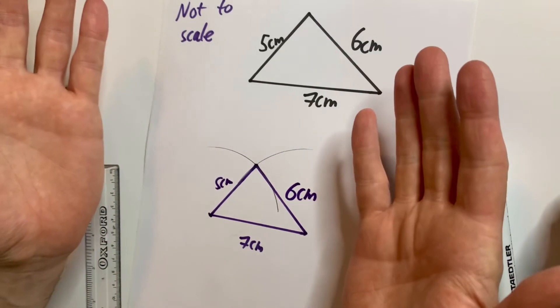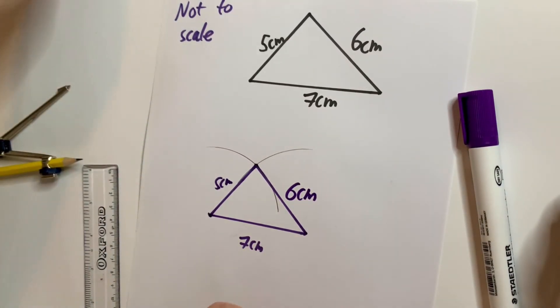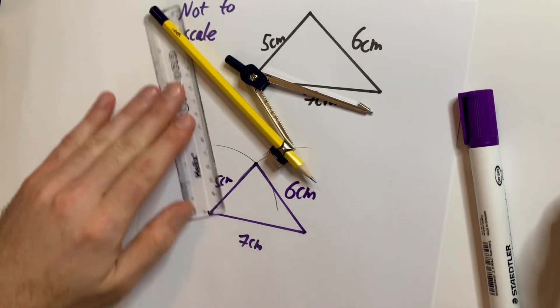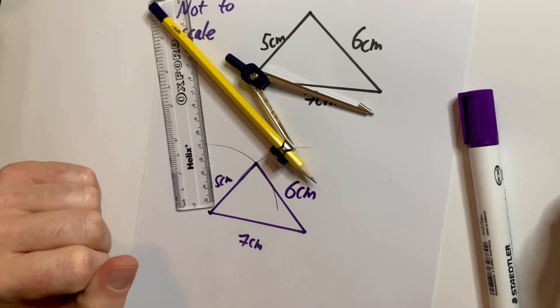And that is drawing a triangle without using a protractor and just using a compass and a ruler. This has been Master Jacko. Take care and I'll see you next time.